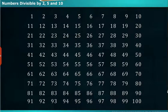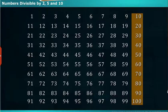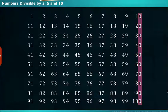Let's identify the numbers which are divisible by 10, leaving the remainder as 0. If we observe the numbers carefully, the digit in the ones place is 0. Hence, all the numbers which are divisible by 10 are called multiples of 10.